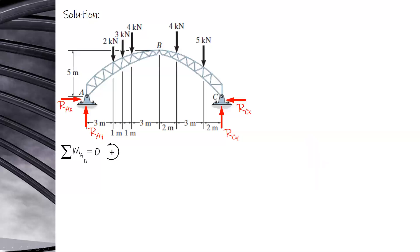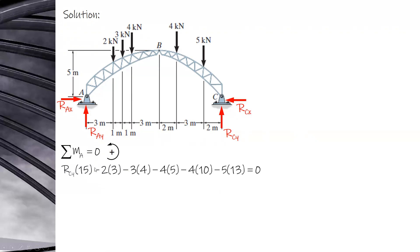The first condition is to take the moment at A, because if you use force summation in either X or Y you still have unknowns. So start with summation of moments at A or C. For A, you can solve for RCY. RCY times 15, and then all of the loads have clockwise moments. Solving for RCY gives 9.533 kN.